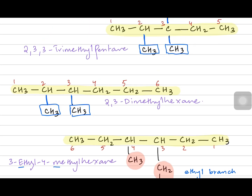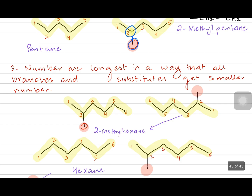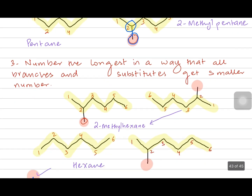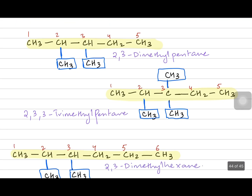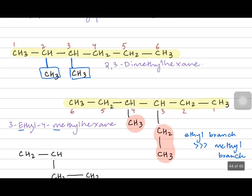Let's go back and write this rule: among branches, we name them alphabetically. So ethyl is named first and then methyl — giving us 3-ethyl-4-methylhexane.